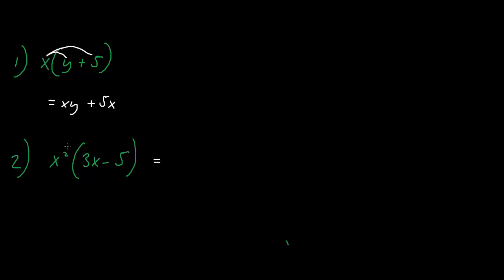Now let's expand expression number 2. So first we multiply x squared by 3x, giving us 3x to the power of 3, and then we multiply x squared by minus 5, so we get minus 5x squared. So this expression expanded is equal to 3 multiplied by x to the power of 3 minus 5x squared.